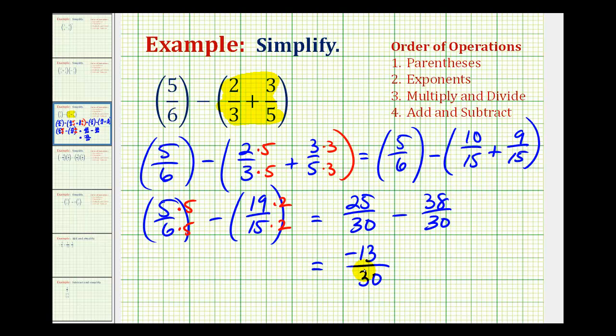So negative thirteen over thirty, but since this fraction is negative, a lot of times you'll see the negative out in front of the fraction bar, like this. These two fractions are equivalent, but this form is more common. I hope this was helpful.